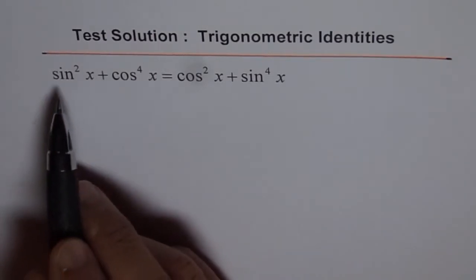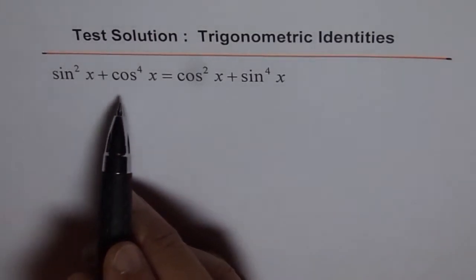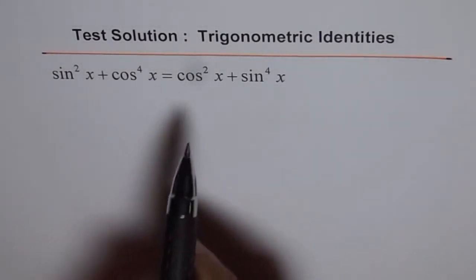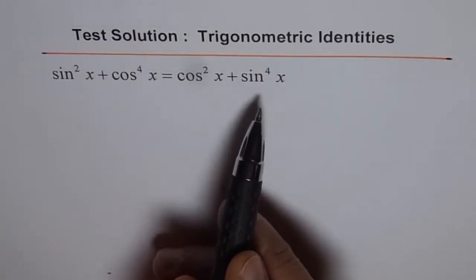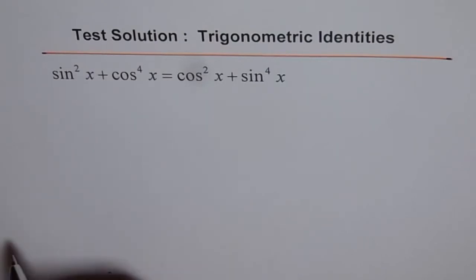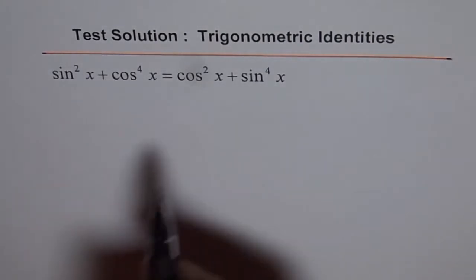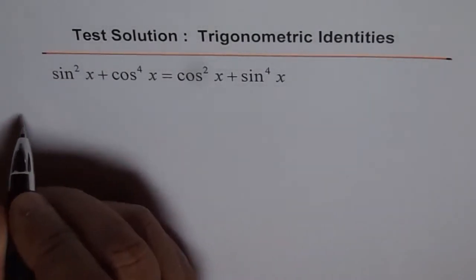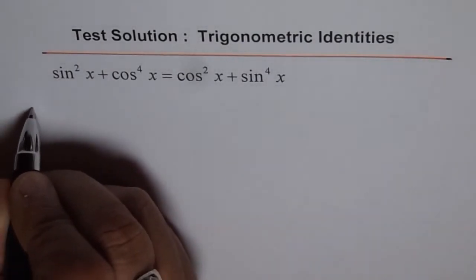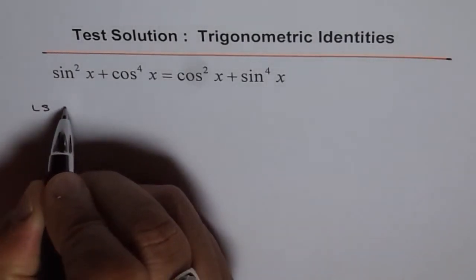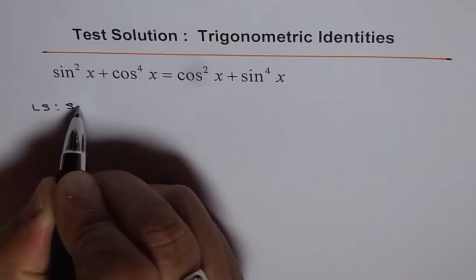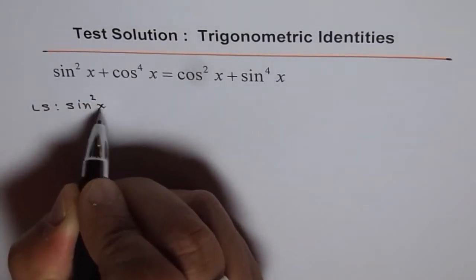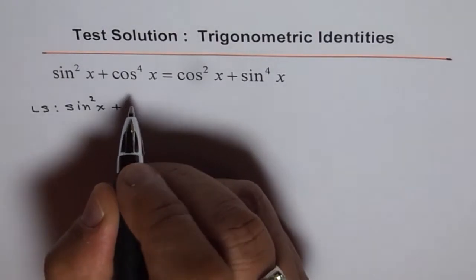This problem is: sine squared x plus cos to the power of 4x equals cos squared x plus sine to the power of 4x. We can start from either side, so let's start from the left side. The left side is sine squared x plus cos to the power of 4x.